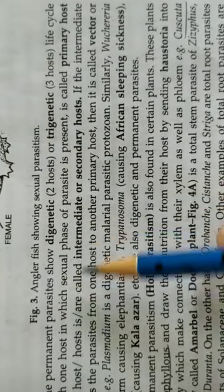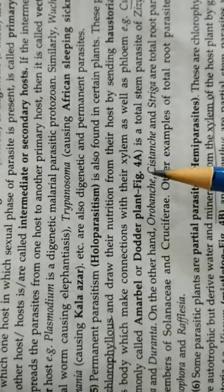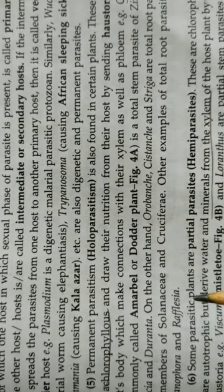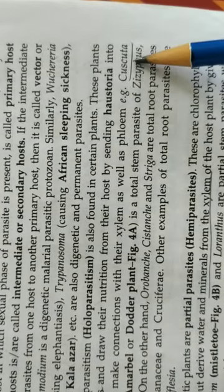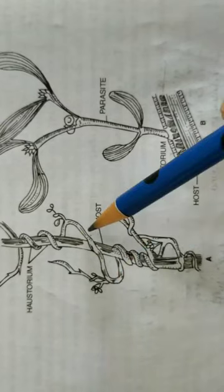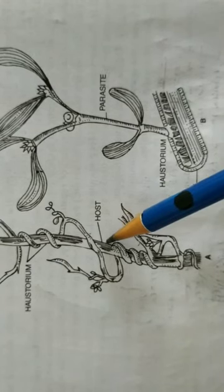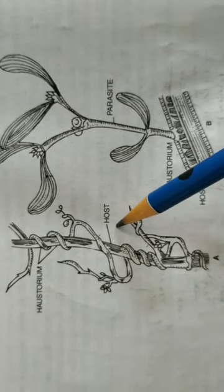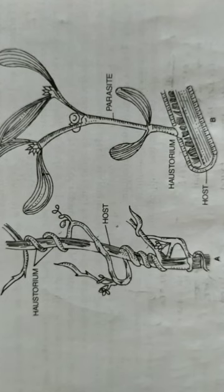In plants, we have examples such as Cuscuta, also called Amarbel or dodder plant. Cuscuta is achlorophyllous — it does not have chlorophyll. It lives on the surface of host plants and gives rise to haustoria, through which it derives its nourishment from the host plant. The haustoria develop and make contact with the xylem and phloem of the host plant to obtain nourishment.